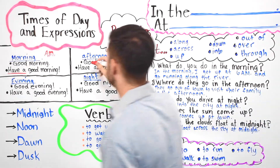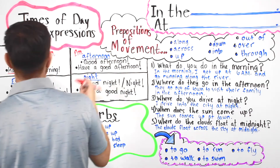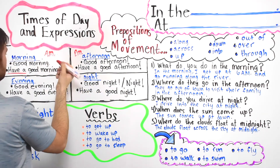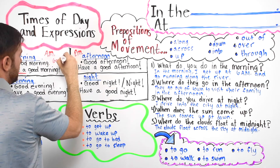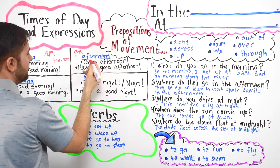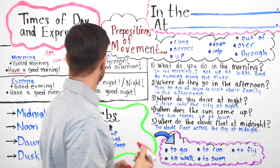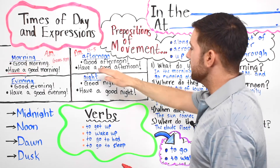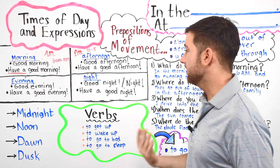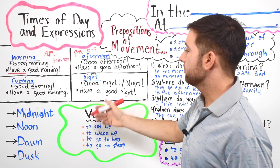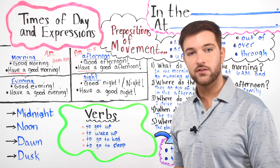Next we have afternoon. Remember, afternoon is also p.m. Afternoon is usually from 12 until about 5 p.m. When you want to say hello to somebody, you can say 'good afternoon' — like at a restaurant: 'Hello, good afternoon.' Again, when you want to say goodbye, you say 'have a good afternoon.' Goodbye, have a good afternoon, thank you for coming.